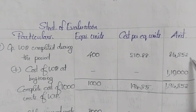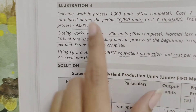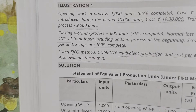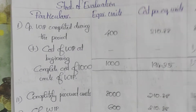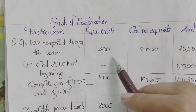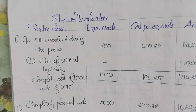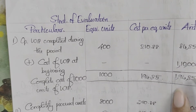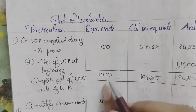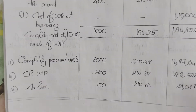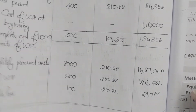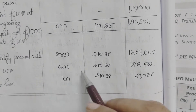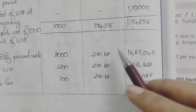In the statement of evaluation: opening WIP completed during the period has 400 equivalent units at cost per unit 210.88. Add the total cost of the 1,000 opening WIP units from before. Then the 8,000 completely processed new units. Closing WIP 600 equivalent units and abnormal loss 100 equivalent units are also valued at cost per unit.